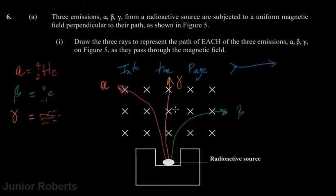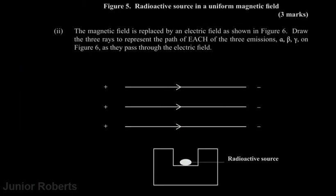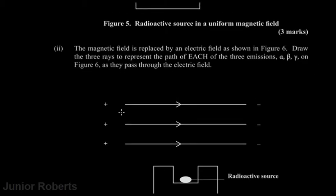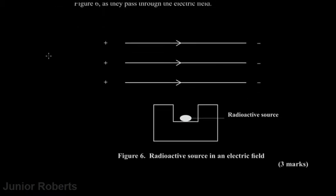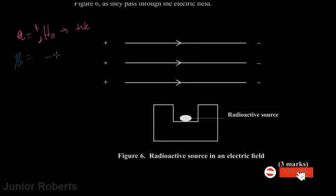Moving on — the magnetic field is replaced by an electric field as shown in figure six. Draw the three rays to represent the path of each emission — alpha, beta, and gamma — as they pass through the electric field. Considering the charges: the alpha particle is a helium nucleus with a positive charge, and the beta particle, which is a high-speed electron, has a negative charge.